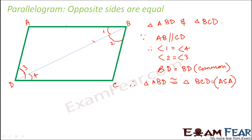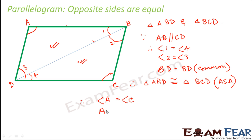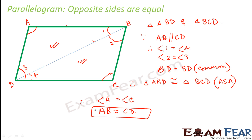Therefore these two triangles are congruent. Whenever two triangles are congruent, all their corresponding sides and corresponding angles are also equal. Since these two triangles are congruent, angle A is equal to angle C - opposite angles are equal - and AB is equal to CD - opposite sides are equal. This proves that opposite sides in a parallelogram are equal.